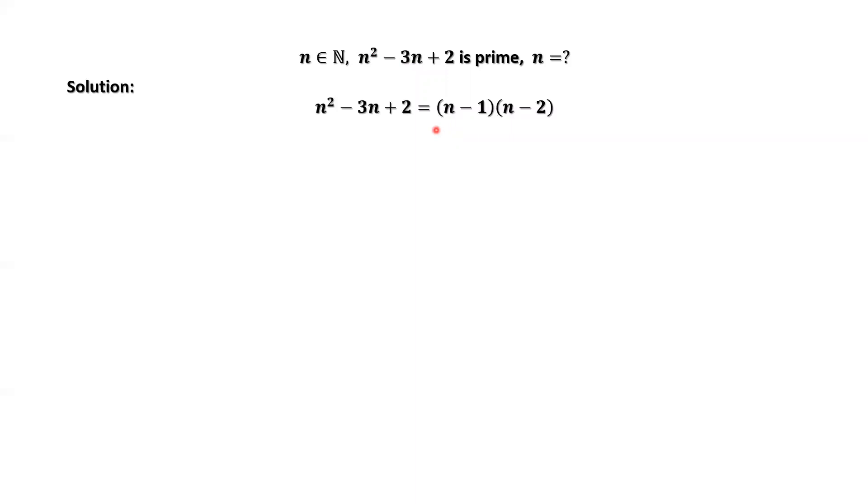We have two numbers on the right-hand side, n minus 2 and n minus 1. The two numbers are two consecutive numbers.